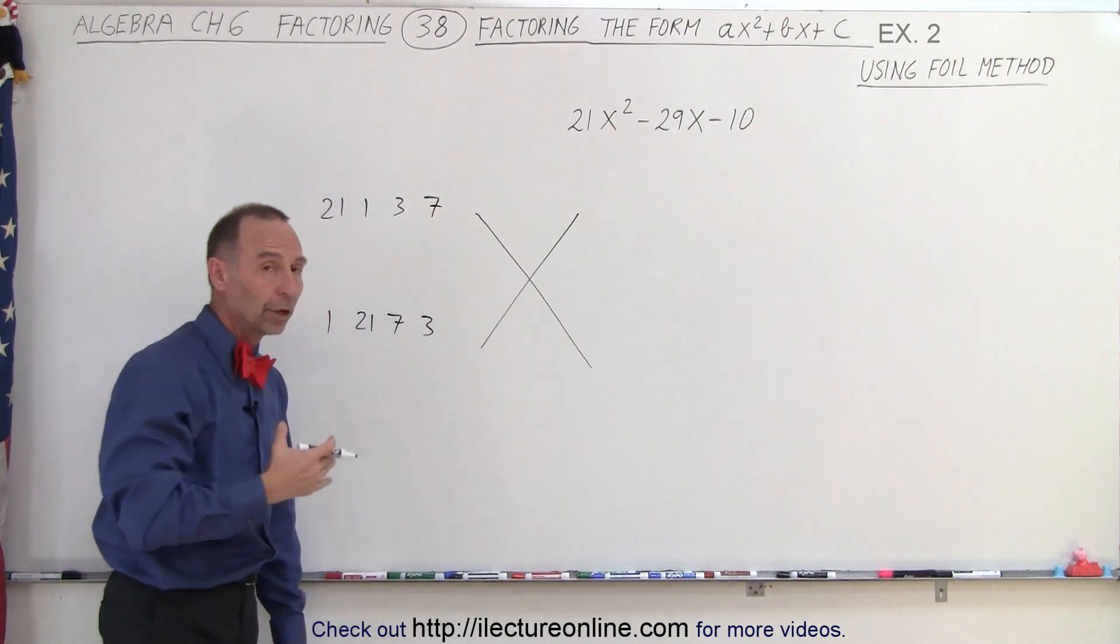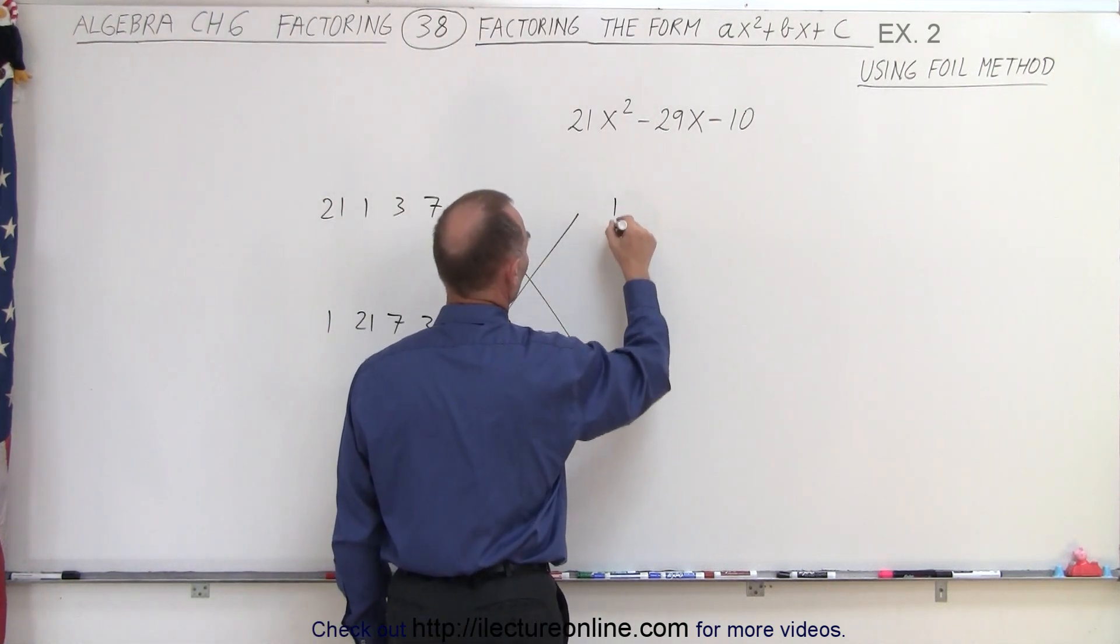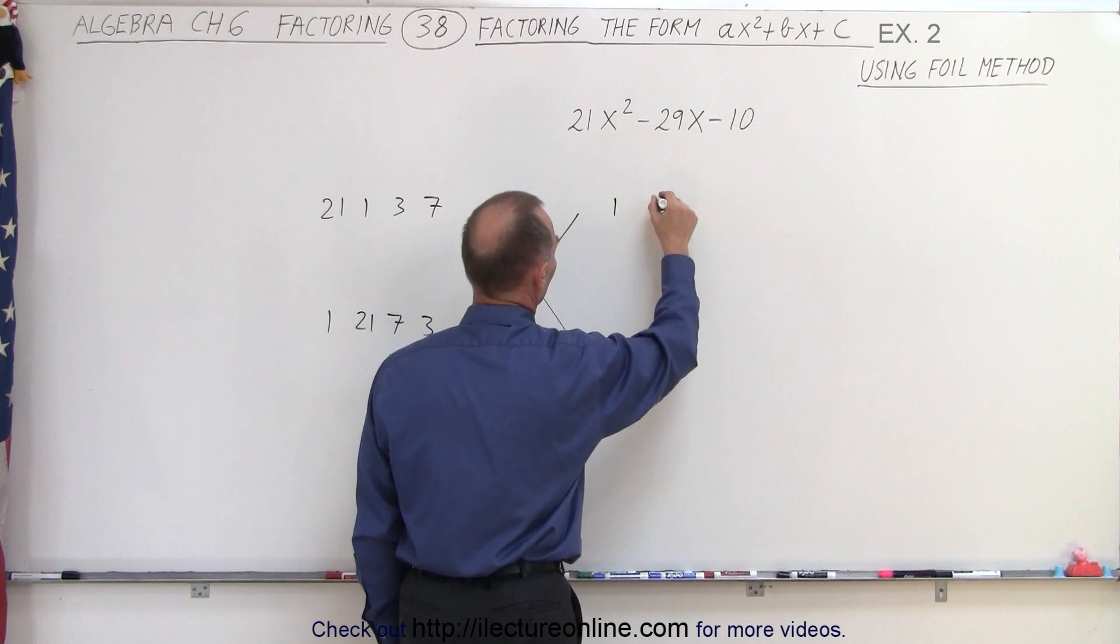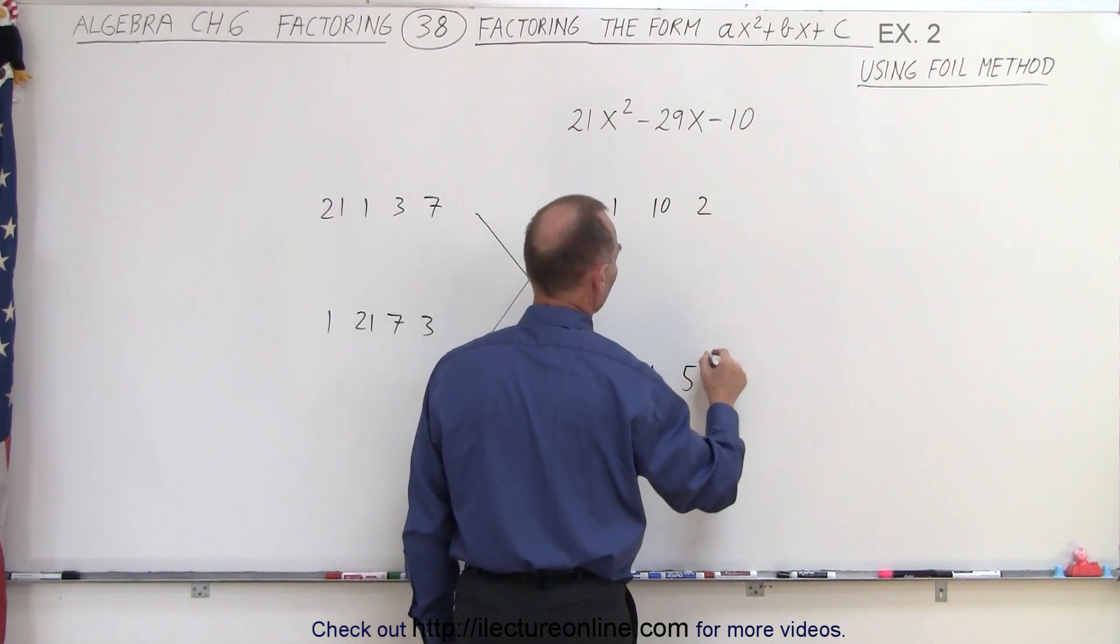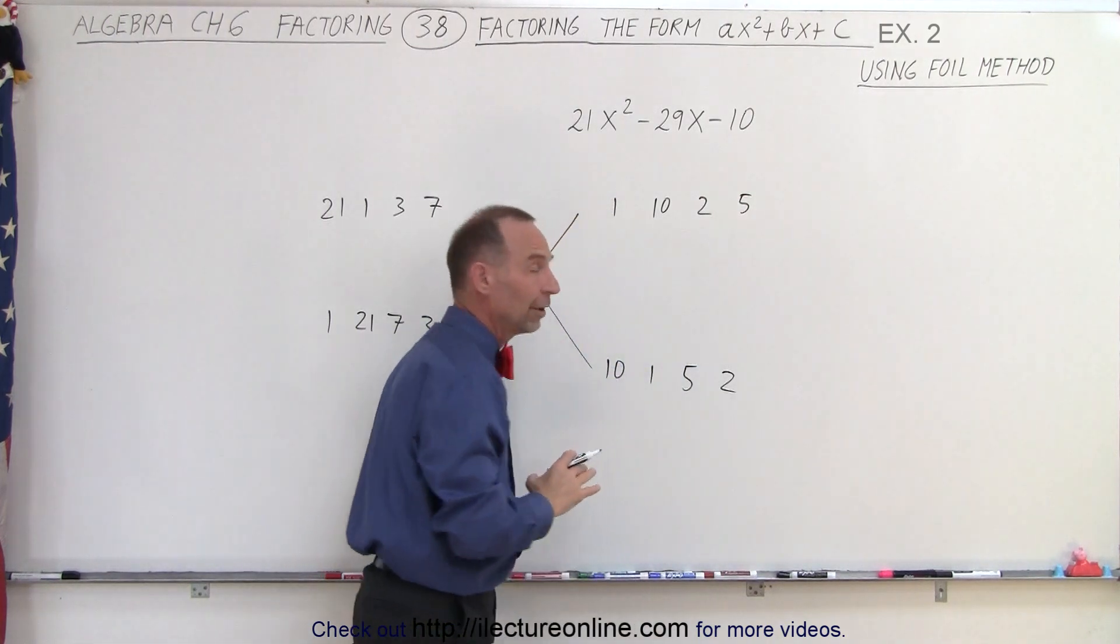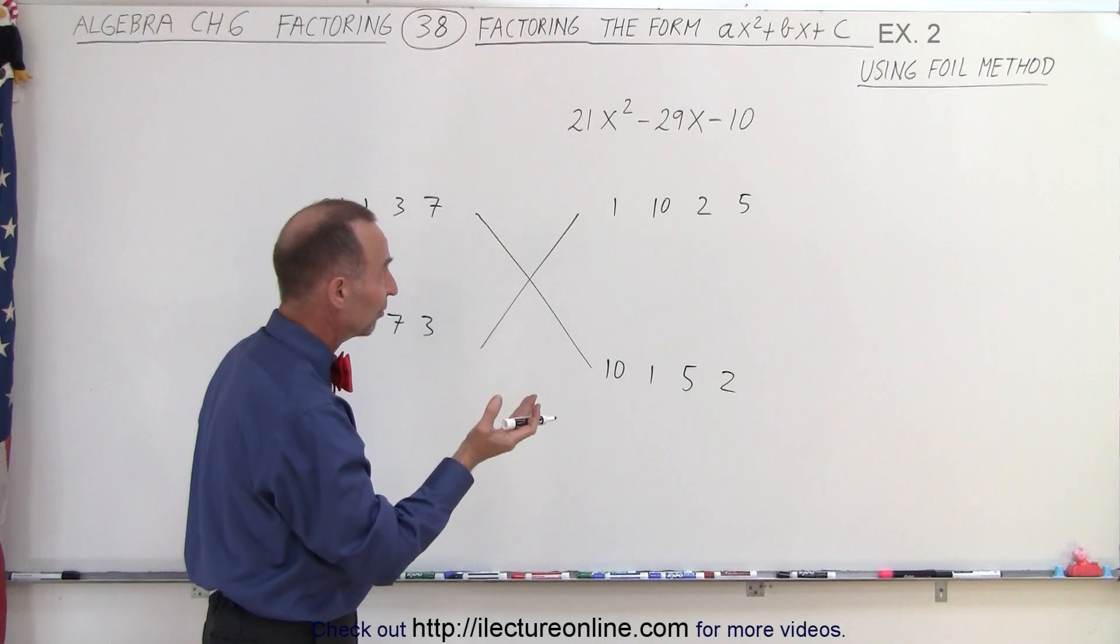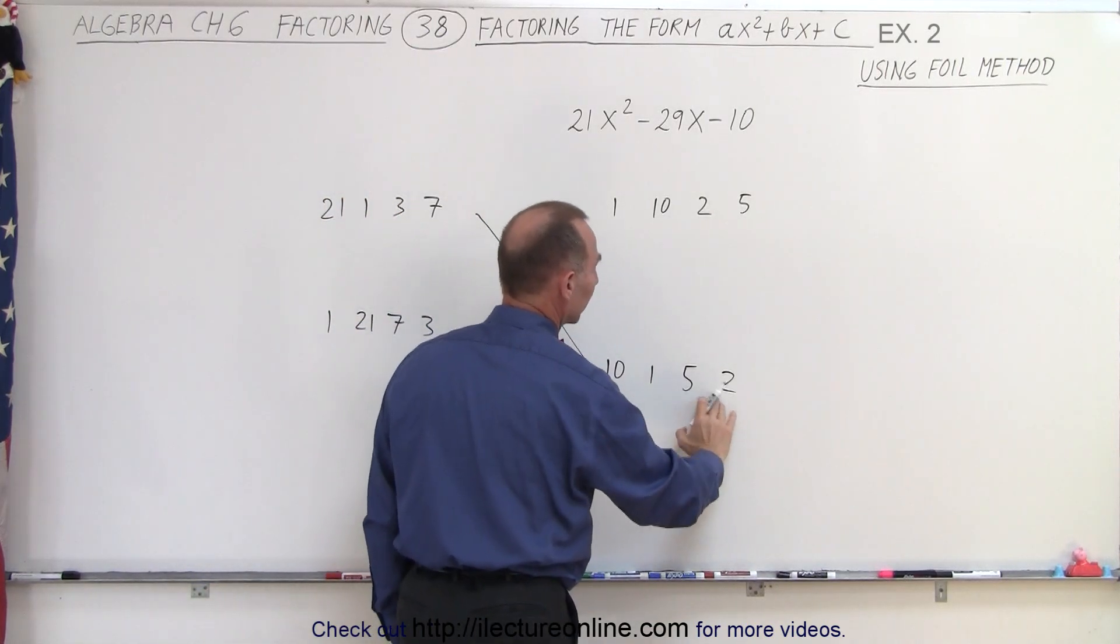On the right side, we put all the possible combinations to get negative 10. So that means we have a 1 and a 10, a 10 and a 1, we have a 2 and a 5, and a 5 and a 2. And then also we have double that many combinations because we need a negative sign, and the negative sign can end up at the top or the bottom.